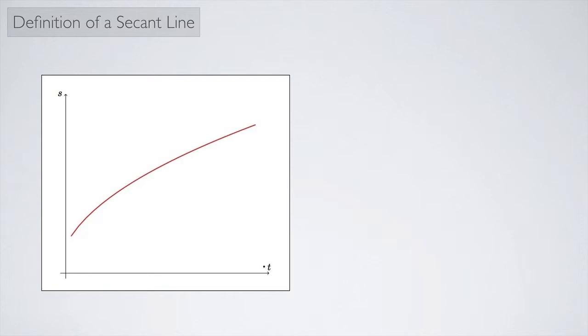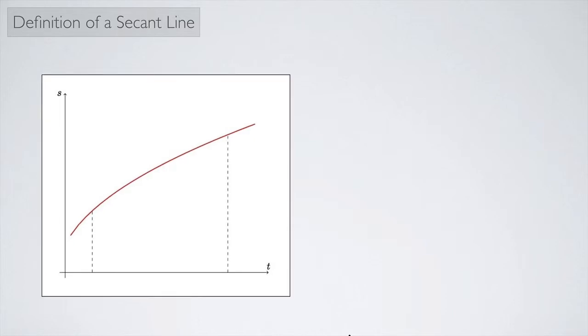So this axis is the time axis and this axis up here, s, shows its position at any given time. And we want to calculate the average velocity between two different times, maybe these two times right here.